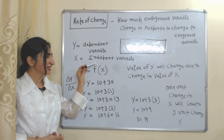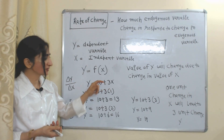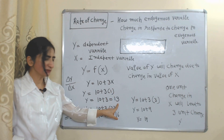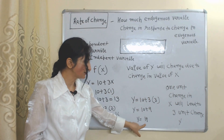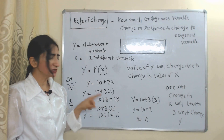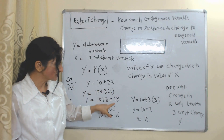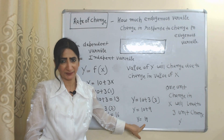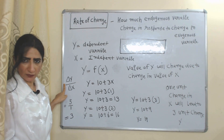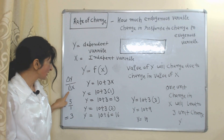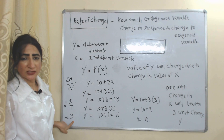Here our dependent variable is y and independent variable is x, so y is a function of x. If we put x=1, y=30; x=2, y=60; x=3, y=90. One unit change in x leads to 3 units change in y. We represent rate of change as delta y over delta x — change in y is 3, change in x is 1, so the rate of change equals 3.